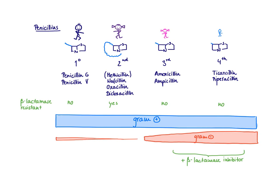In this video, I want to talk about the four different generations of penicillins. The penicillins are categorized by generation, and the generation tells you what kind of spectrum of activity those drugs have.